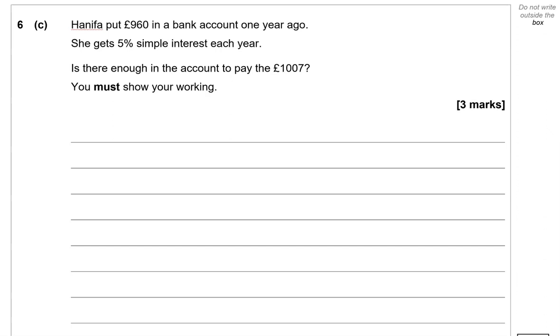Hanifa put £960 in a bank account one year ago. She gets 5% simple interest each year. Is there enough in the account to pay the £1007? You must show your working. So the rate is 5% simple interest. She put the money into the bank account one year ago, so she's only had one increment of 5%. So let's work out 5%. So 5% is 5 out of 100 of the amount, which is £960. So in the calculator we'll do 5 divided by 100 times 960, which is £48. So if we add that to the £960 that she put into the account,